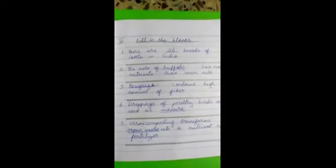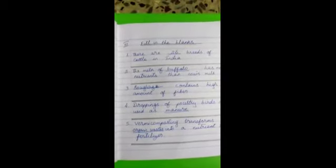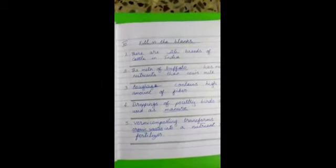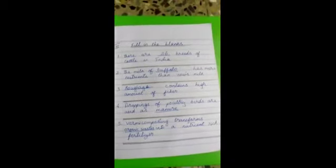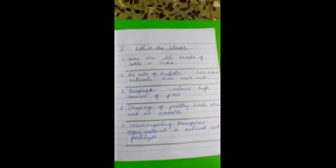Put Roman numeral 3, fill in the blanks. Yes, the first one. There are dash breeds of cattle in India. Answer 26. The milk of buffalo has more nutrition than cow's milk. Answer is buffalo. Put the lines in the buffalo.